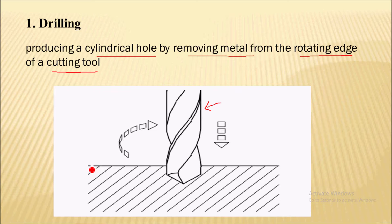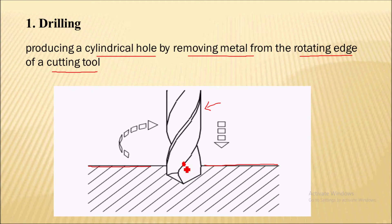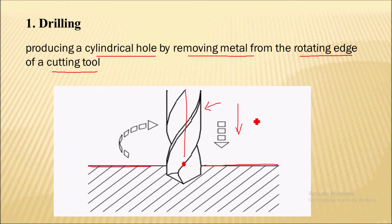First, we clamp the workpiece on the table. After clamping, we make a punch mark on the workpiece where the hole is to be created. After making the punch mark, we align the drill bit with the workpiece properly. Then we feed the drill bit into the workpiece by hand pressure or by a power feed system. In this way, the drilling operation is performed on the drilling machine.